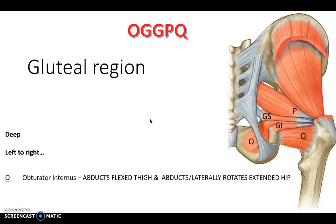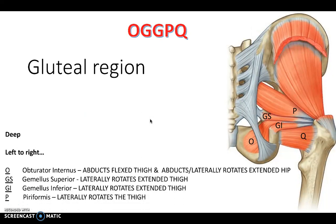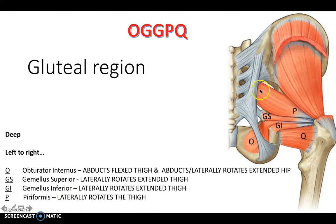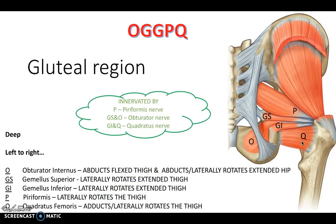Going deeper in the gluteal region we have the mnemonic OGGPQ. We have obturator internus, situated within the obturator foramen of the hip. Then gemellus superior and inferior - superior sitting on top. Piriformis, which laterally rotates the thigh. And quadratus femoris, in that characteristic quadrangular square shape, which adducts and laterally rotates the thigh. All of these have slightly different innervation, but it does make sense when you look at it.